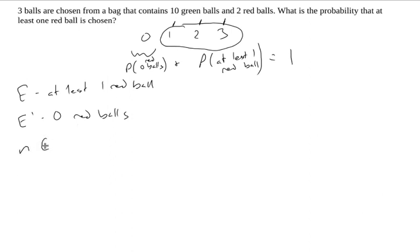Okay, so N of E complement, because this is the thing I'm going to find the probability of. The number of ways that I can get zero red balls. Well, let's see. There are, from the two red balls, I want to choose zero.